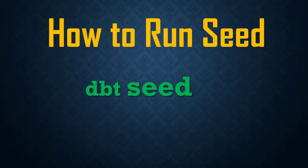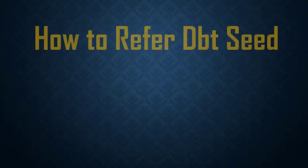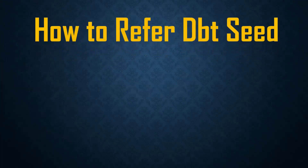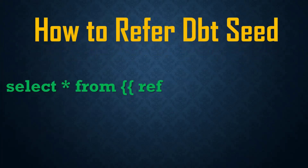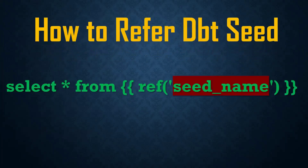Now, how to run seeds? With the help of the dbt seed command. When you execute dbt seed, it will convert the CSV file into the respective table in your data warehouse. By using dbt seed we can execute the seed.